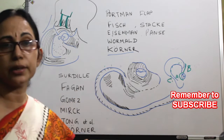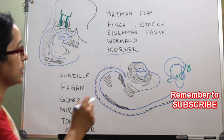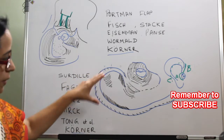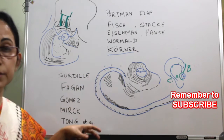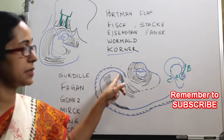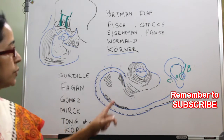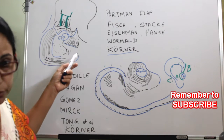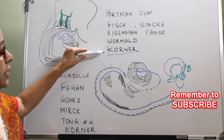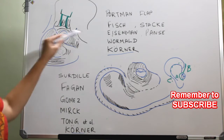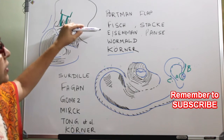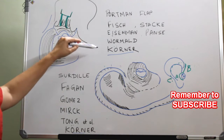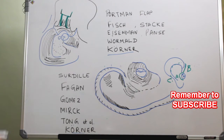In an endoaural incision, the advantage is that we are already making a Hermann B incision through an endoaural approach, and the pinna is pushed posteriorly, so one step is already completed. The common flaps used for posterior reconstruction are: the corner flap (used in both endoaural and postaural), then Portman flap, fish flap, Stacky flap or fancy flap, then Eisenman, Vordmal, and again the corner flap.